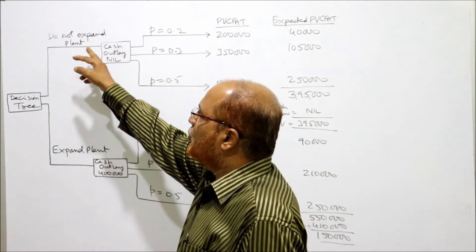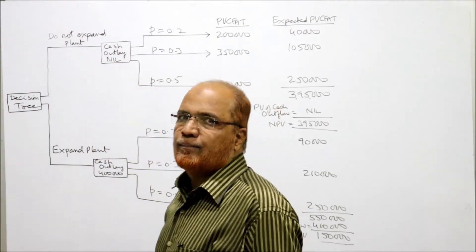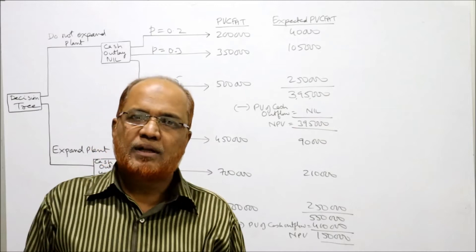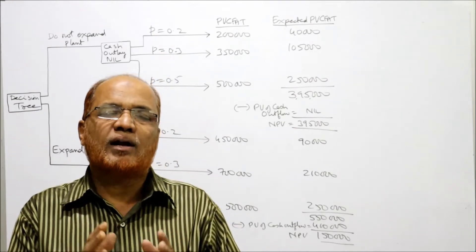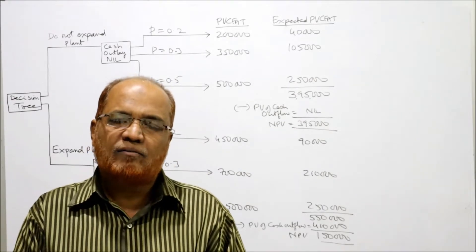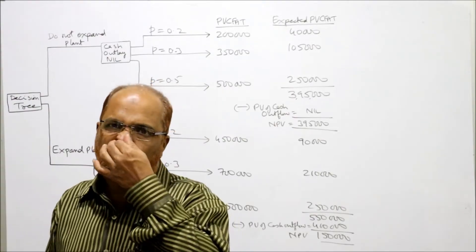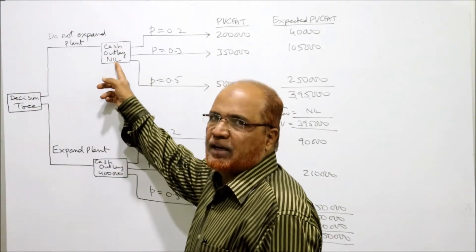If we do not expand the plant, the cash outlay is nil. It is given in the problem that cash outlay will be required only when we expand the plant. When we don't expand, there is no cash outlay, so cash outlay will be nil.